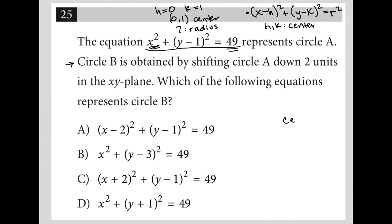So what would happen to the center if we went down two units? It would now be at 0 negative 1, right? Because we're not shifting in the x direction yet at least, we're just shifting in the y direction. So we just convert that positive 1, go down two units, we're at 0 negative 1 in the xy plane. Which of the following equations represents circle B?